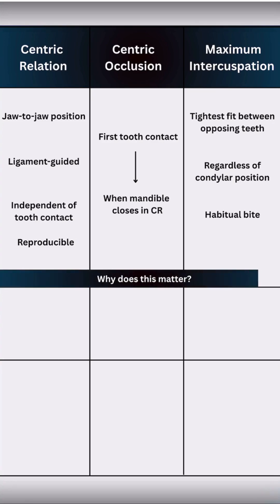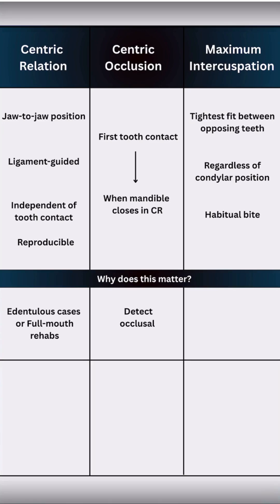Why does this matter? CR gives a stable, repeatable reference, especially for edentulous cases or full mouth rehabs. Centric occlusion helps detect occlusal discrepancies. Maximum intercuspation is easy to identify, so it's often used in restorative dentistry.